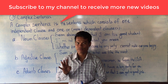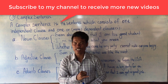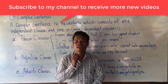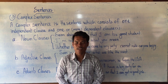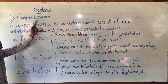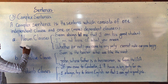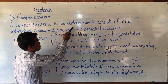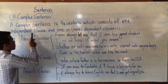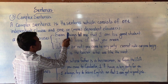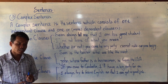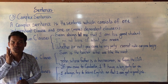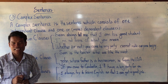You already know four types of sentences. You've finished simple sentences and compound sentences, and in today's video you are going to learn complex sentences. The definition of a complex sentence is a sentence which consists of one independent clause and one or more dependent clauses.